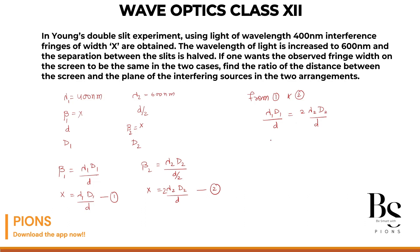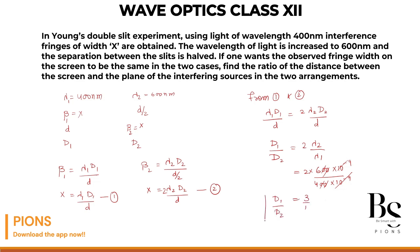The d cancels from both sides, giving D1 upon D2 equals 2 times lambda 2 upon lambda 1. Substituting values: 2 times 600 nanometers divided by 400 nanometers. Cancelling out the units and simplifying, we get 1200 by 400, which equals 3 by 1. So the ratio of the two distances is 3 : 1.